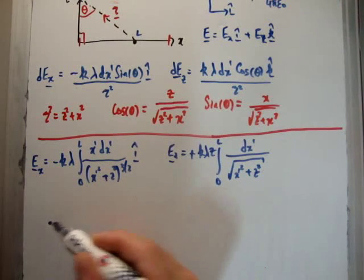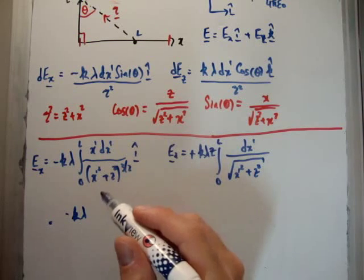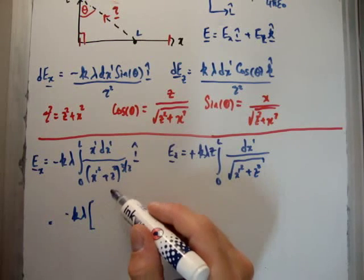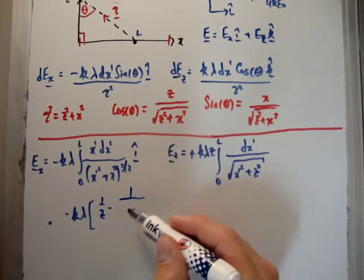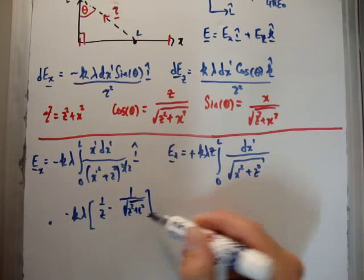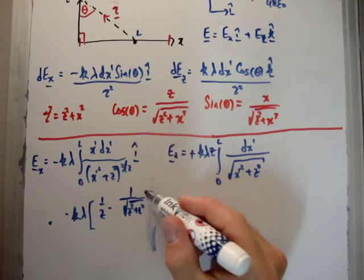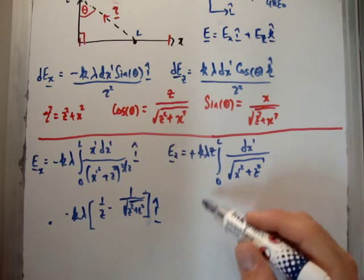It's just minus k times lambda outside of 1/z minus 1/(z² + L²). It's the physics that we're talking about here rather than anything else.